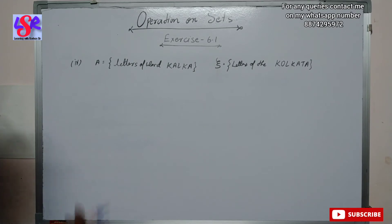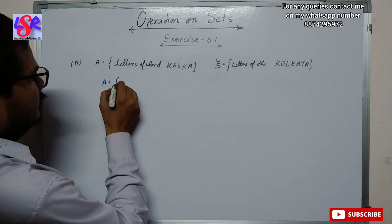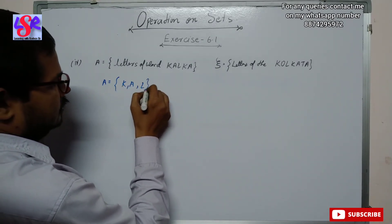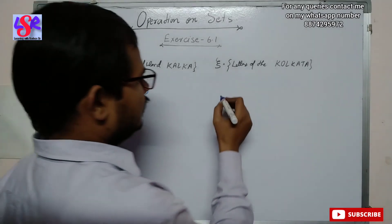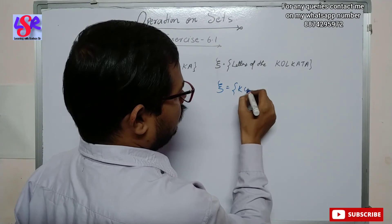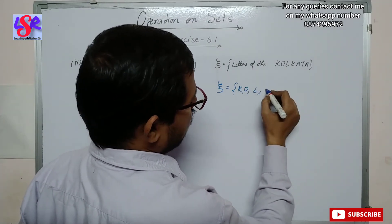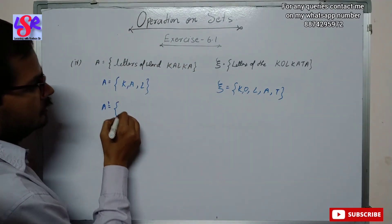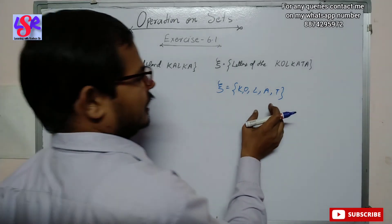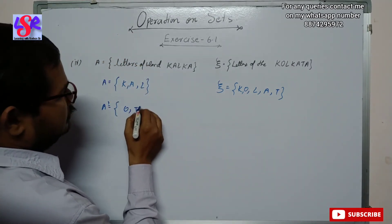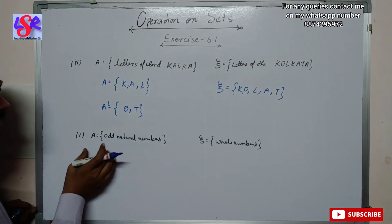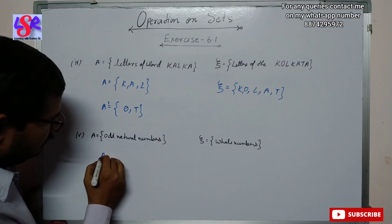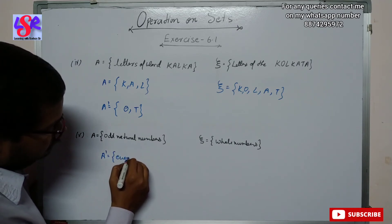In the fourth part, A is the letters of 'Kalka', which can be written as {K, A, L} (removing repeats). The universal set is letters of 'Kolkata': {K, O, L, A, T}. So A complement = {O, T}. In the fifth part, A is the set of odd natural numbers and the universal set is whole numbers. So A complement = even whole numbers.